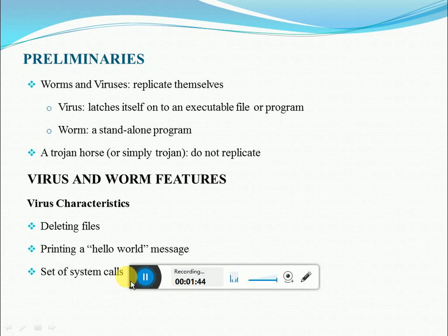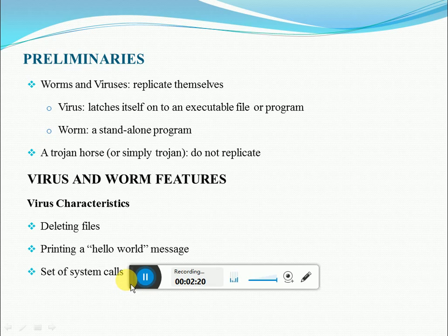A Trojan horse, or simply a Trojan, is a program with a malicious component disguising itself as a useful piece of software. Unlike viruses or worms, Trojans do not replicate. A Trojan is typically activated by action on the part of the victim. They can enter a system in several ways: through email attachments, through file sharing software, from websites, or through cell phone downloads.